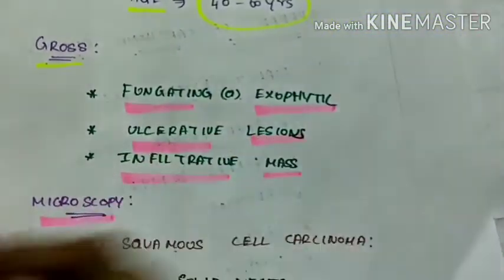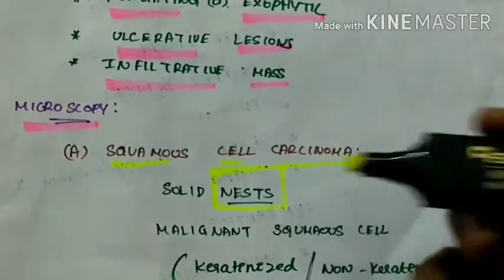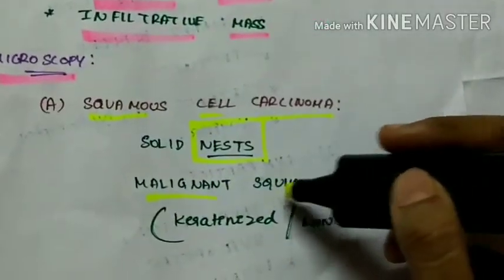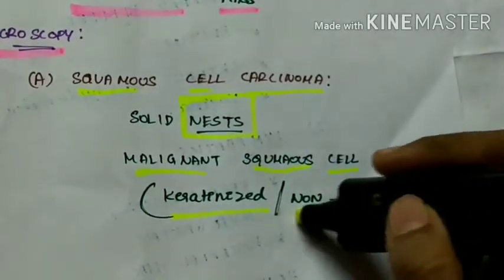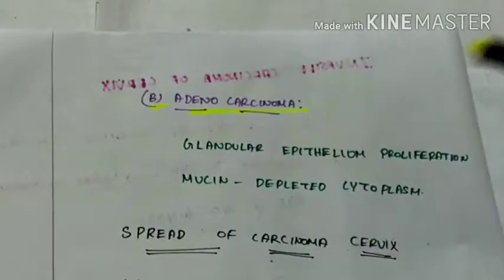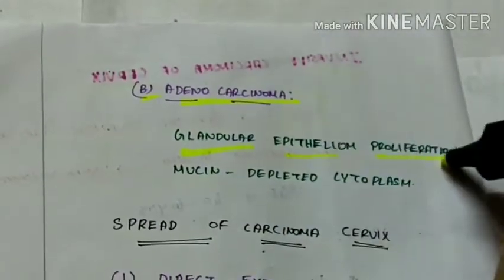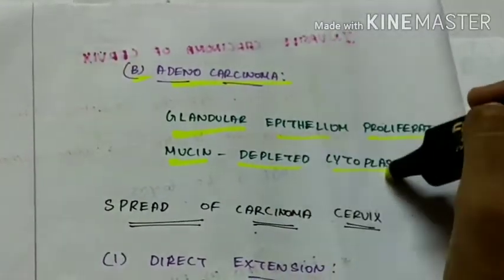Coming to the microscopy, firstly, in case of squamous cell carcinoma, there is presence of solid nests and malignant squamous cell which can be keratinized or non-keratinized. Next is adenocarcinoma which shows glandular epithelial proliferation and the mucin which is depleted of cytoplasm.